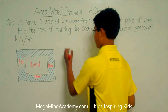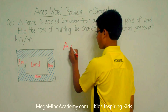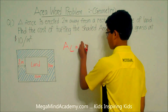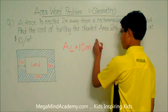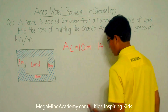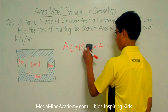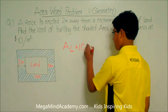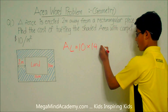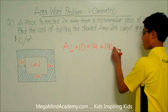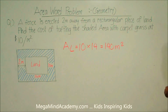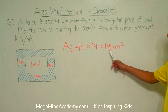The area of the land — A_L for area of land — is equal to 10 meters times 14 meters, which is equal to 140 meters squared. So the area of the land is 140 meters squared.